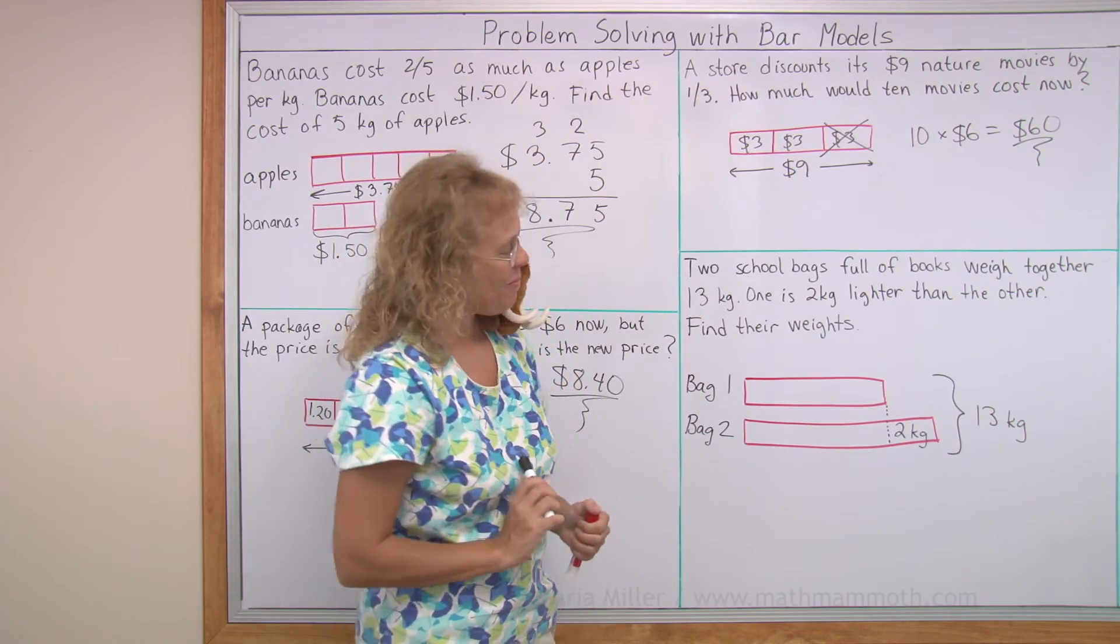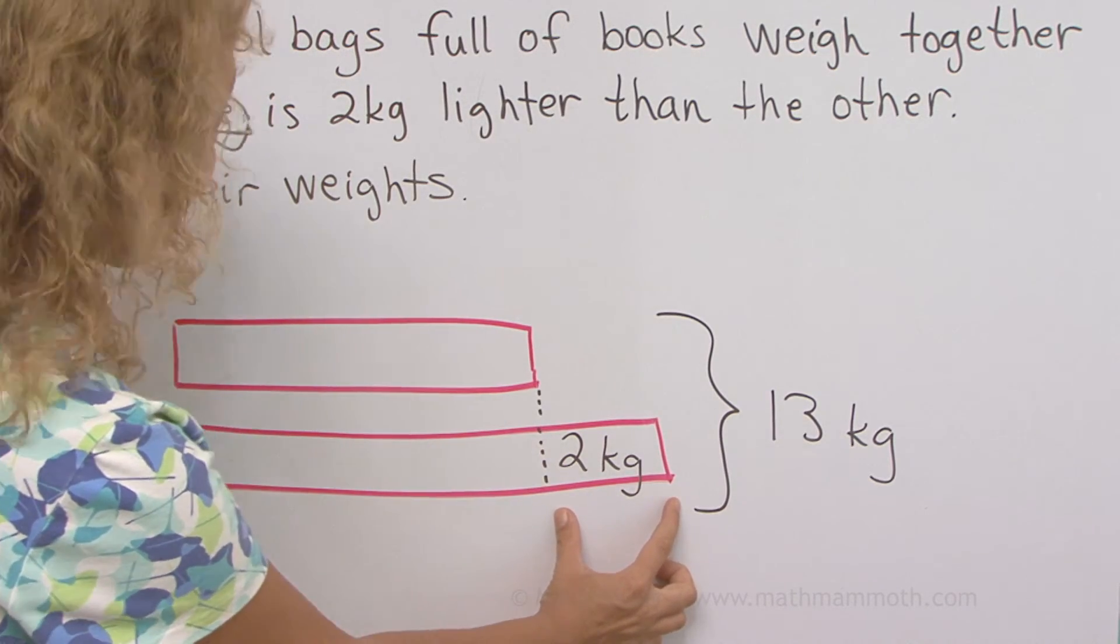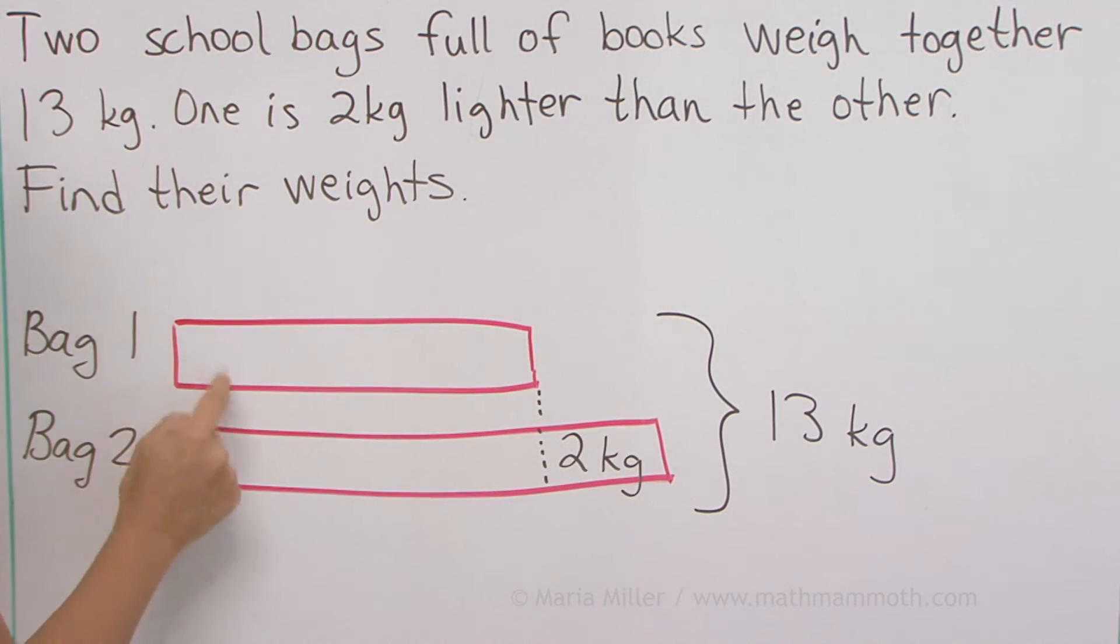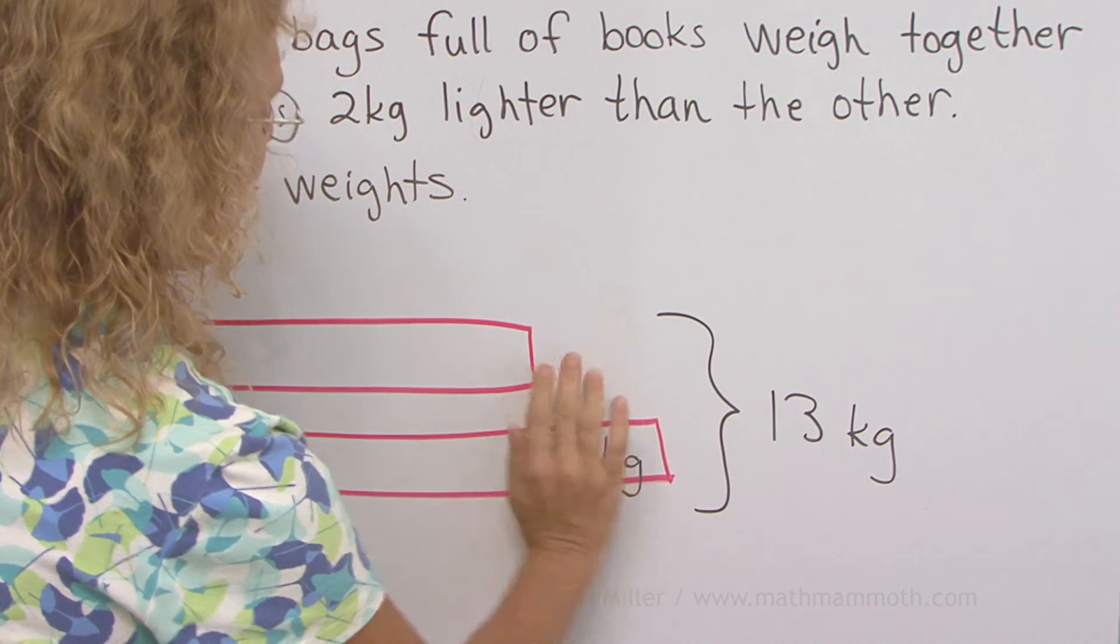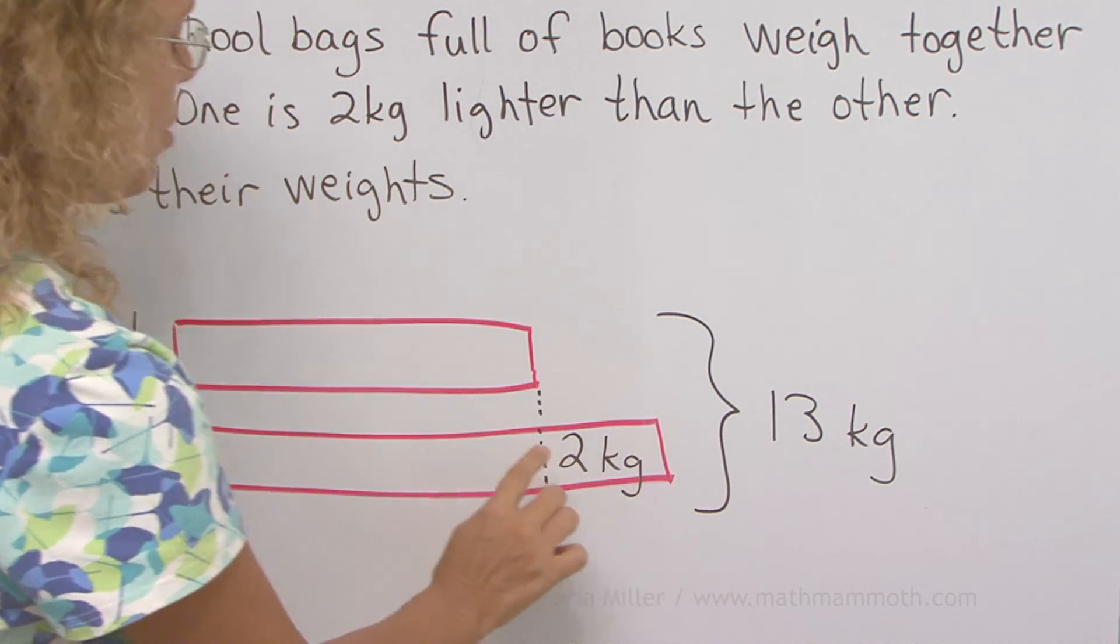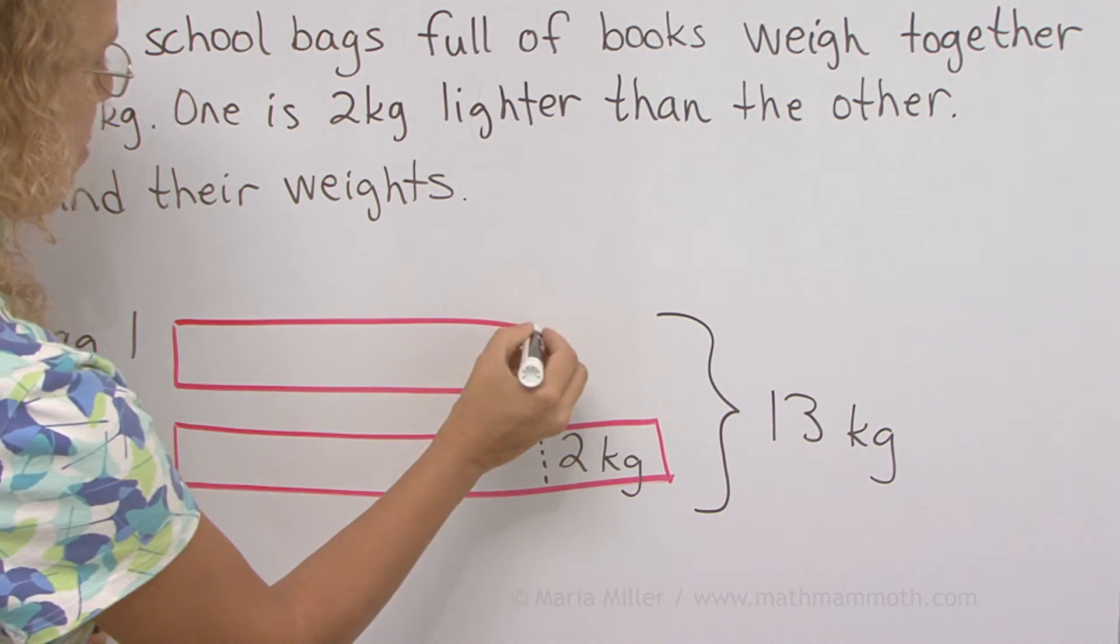And now to solve it, we basically take away these two kilograms here, we take them away, and then you would have two bars of equal length here. And if you take away two kilograms, then how much do these two weigh together? It would be 13 minus 2 equals 11. These two together equal 11 kilograms. Let me see if I can mark it here somehow.